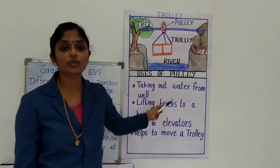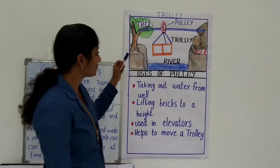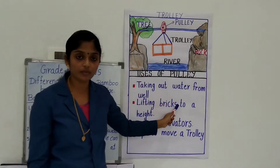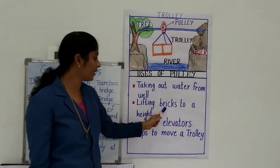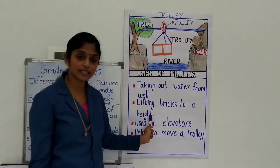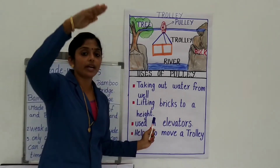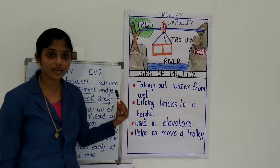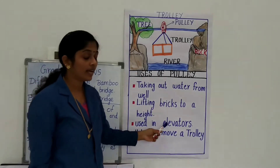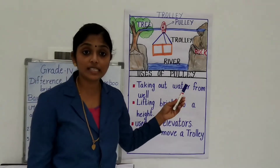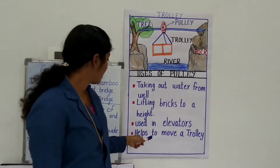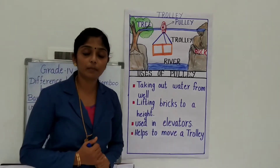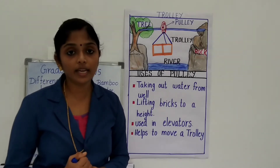And the next use is it helps to move a trolley. So these are the different uses of a pulley: taking out water from the well, lifting bricks to a height, used in elevators, and helps to move a trolley.